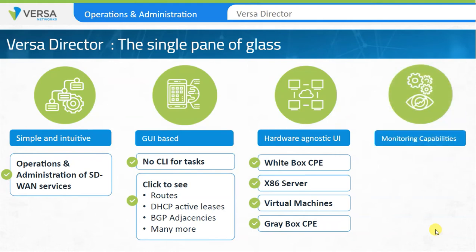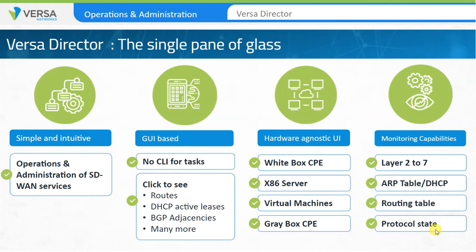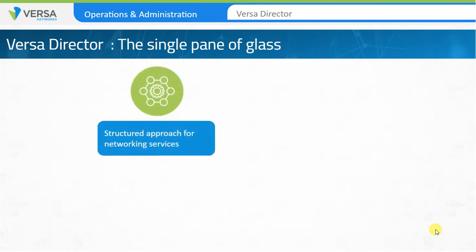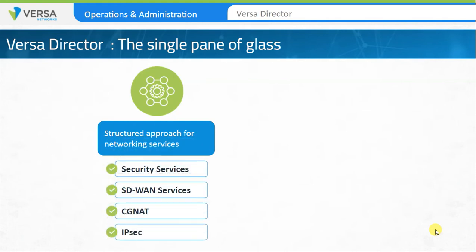Versa monitoring capabilities include layer 2 to layer 7 information, and provide information on networking attributes such as ARP table information, DHCP binding data, routing table information, dynamic routing protocol states, etc. Versa provides a structured approach for the operations of different networking services, including security, SD-WAN, CG-NAT, IPsec, etc.